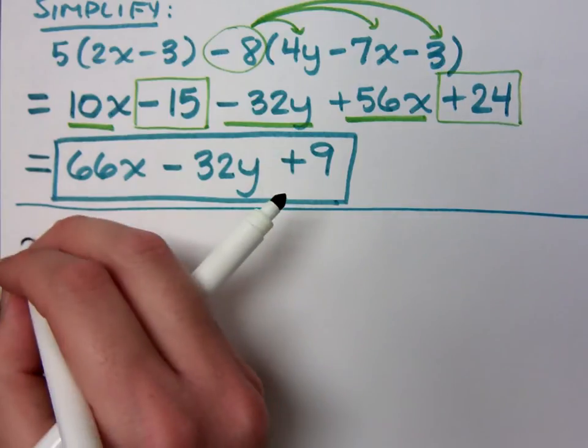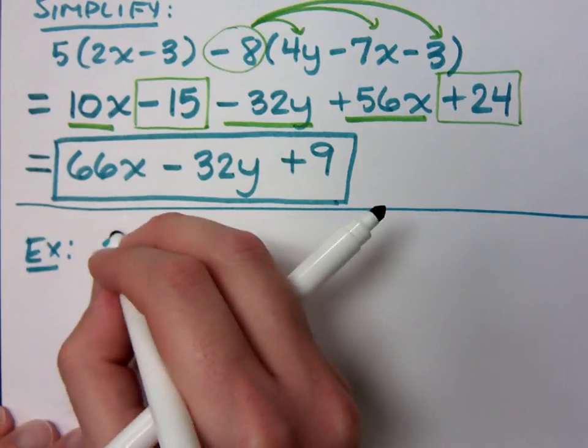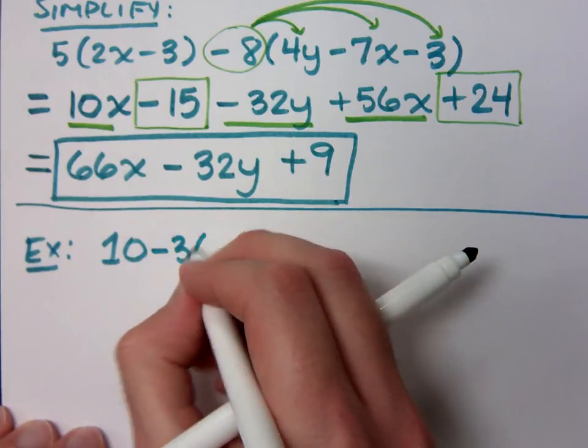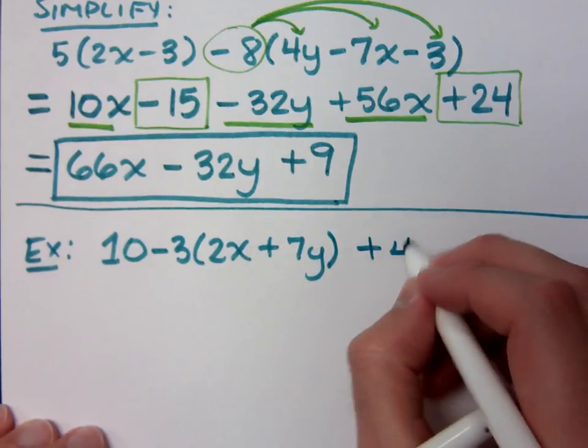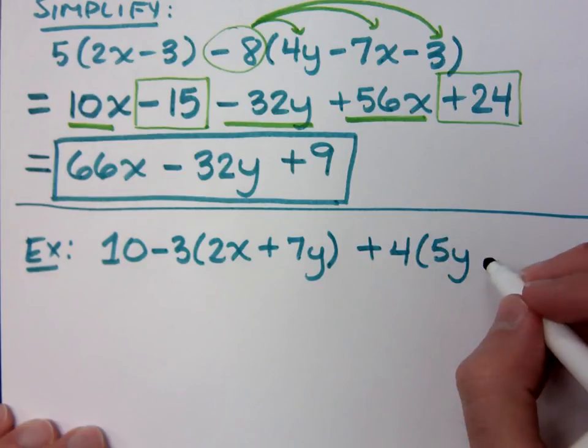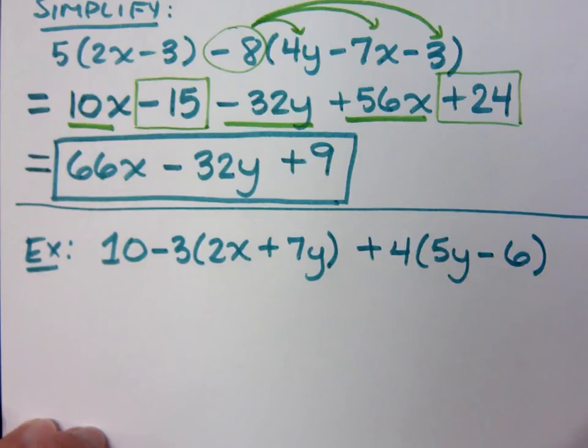All right, let's try this one. If I do 10 minus 3 times 2x plus 7y plus 4 times 5y minus 6. The order of operations that you were taught never go away. You do what's inside parentheses if you can. There's nothing I can do. You move on to exponents. I have none. And thus you go on to multiplication and division from left to right.